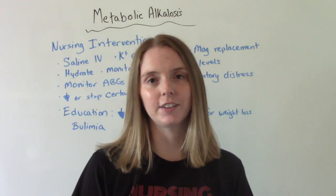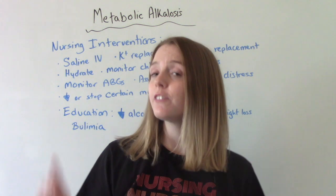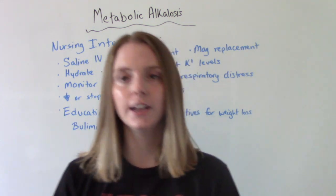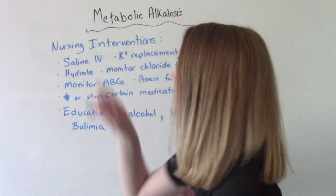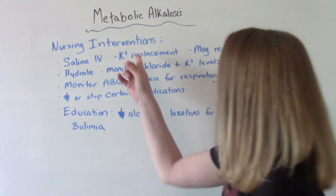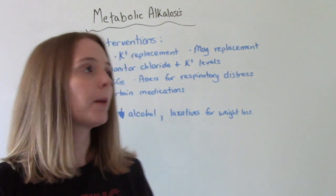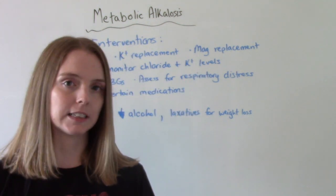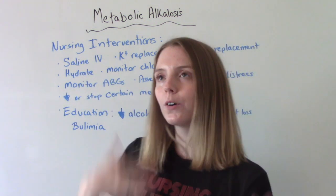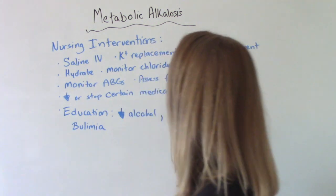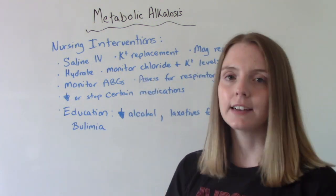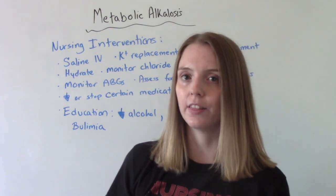Now let's talk about nursing interventions. These will vary depending on whether you have chloride-responsive or chloride-resistant. We may give a saline IV to hydrate our patients. They might need potassium replacement or magnesium replacement. We want to make sure they're well hydrated through oral fluids, IV fluids, or both. We want to monitor labs closely — chloride levels, potassium levels, and ABGs.